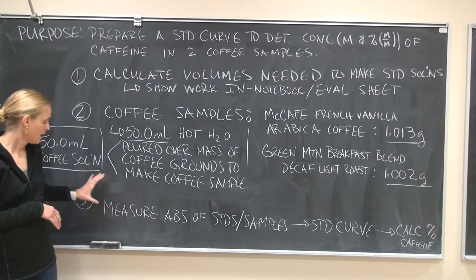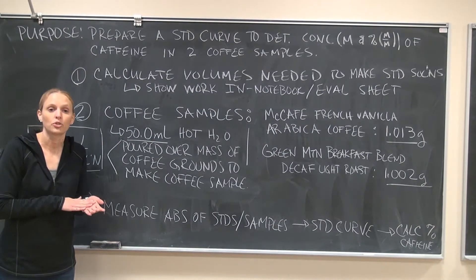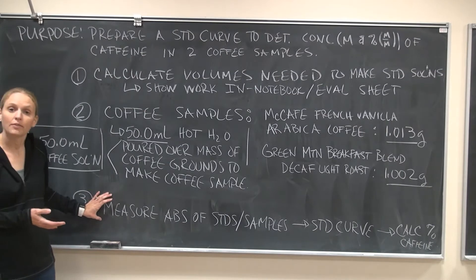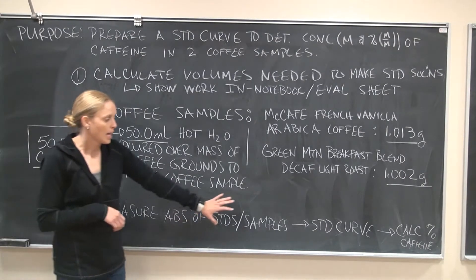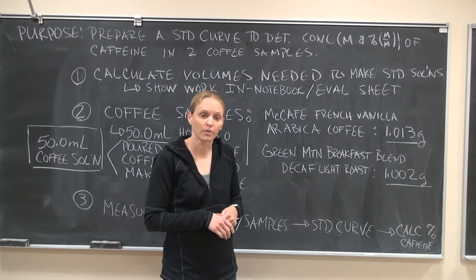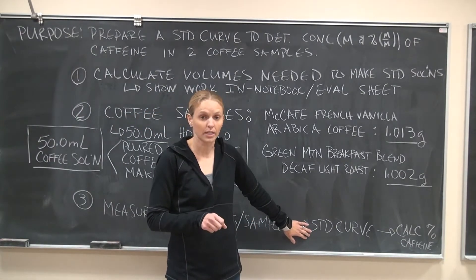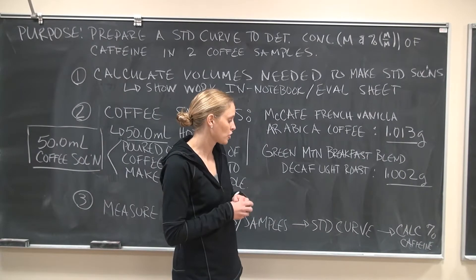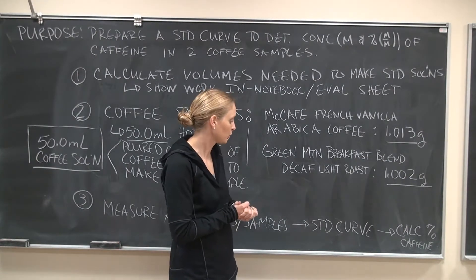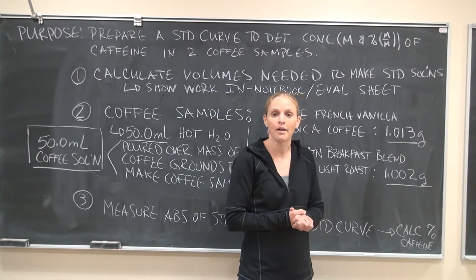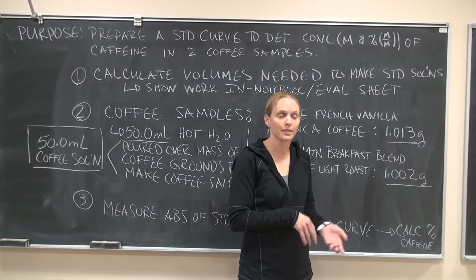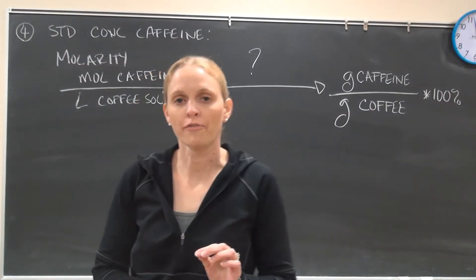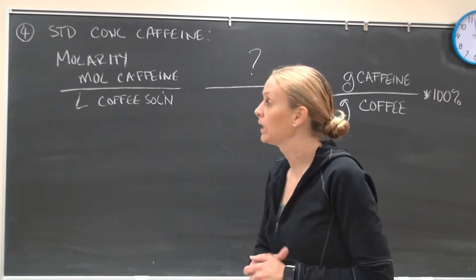Once the standard solutions are made and the coffee samples are prepared, we're going to measure the absorbance of all of them on the UV-vis spectrophotometer. We'll get our absorbances, use the concentrations of our standards, make a standard curve in Excel, and you'll email that to me along with your evaluation sheet and results discussion. Then we'll calculate the percent and molarity of caffeine.